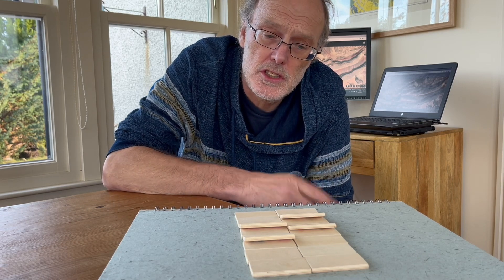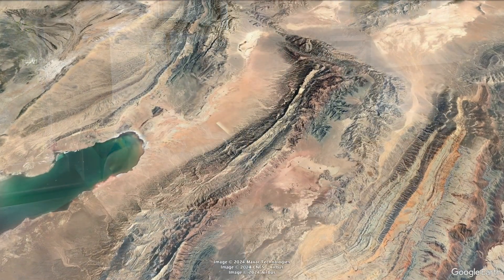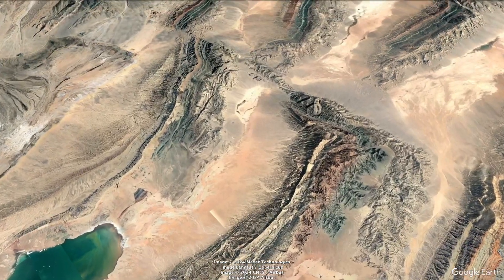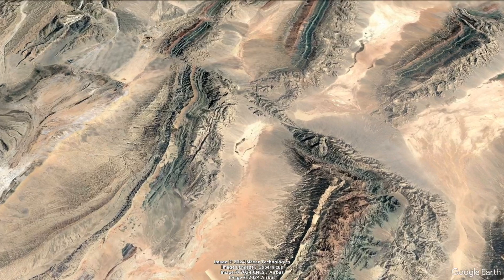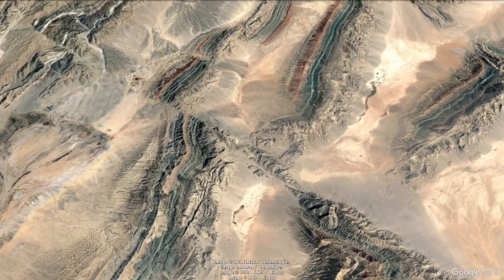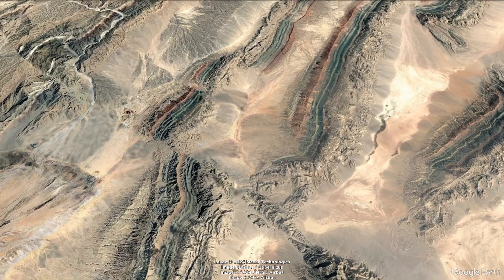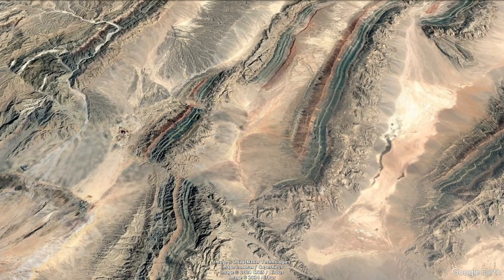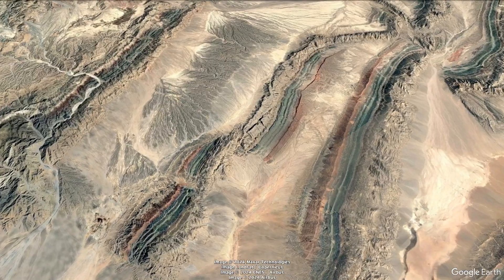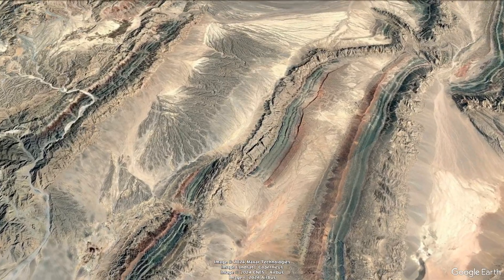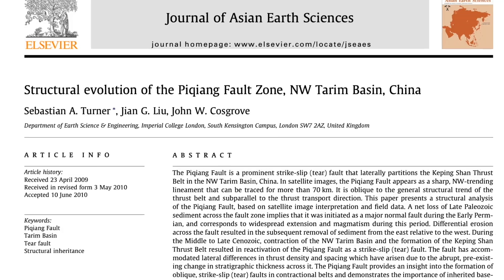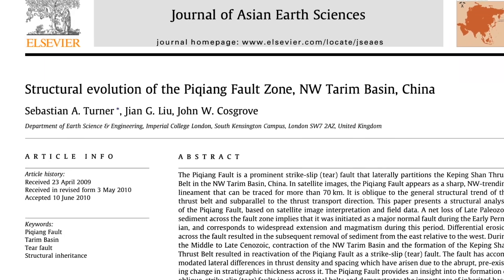Indeed, there's evidence from the stratigraphy — the sequence of rocks on either side of the Pikiang fault — that the fault line itself was there long before the thrusting. For more information and documentation of the Pikiang fault's early history and role in compartmentalising the thrust belt, check out the paper by Sebastian Turner and co-workers. It's great.